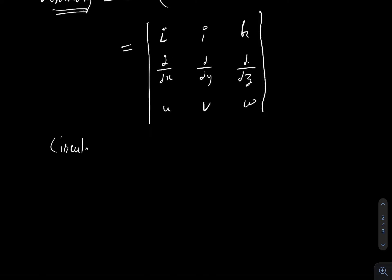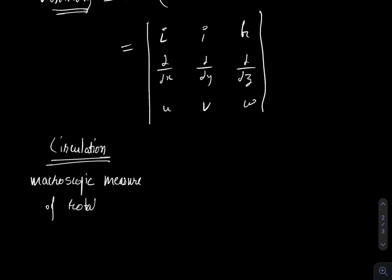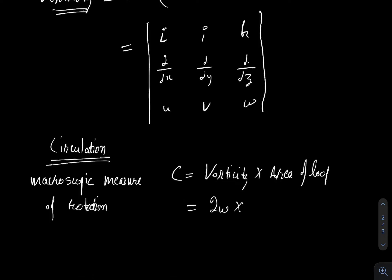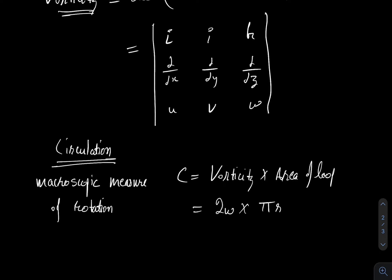There is one more term called circulation. Circulation is basically a macroscopic measure of rotation. It is denoted by C and it equals vorticity multiplied by the area of the loop — the area for which you want to calculate the circulation. So it equals 2 omega times the area; for a circle it will be 2 omega pi r squared. Circulation is a macroscopic measure of rotation, while vorticity is a microscopic measure of rotation.